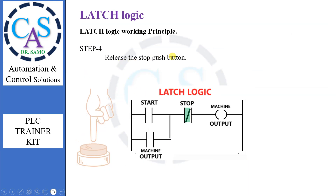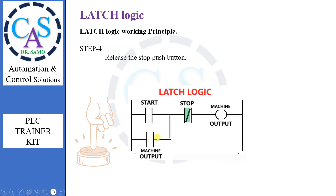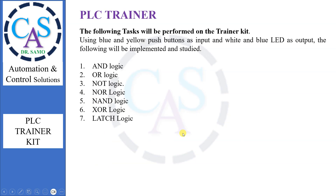Release the stop push button. As the stop push button is normally connected, on releasing it will be connected. The ladder diagram will come to its initial state. The following tasks will be performed on the trainer kit, using blue and yellow push buttons as input and white and blue LED as output.